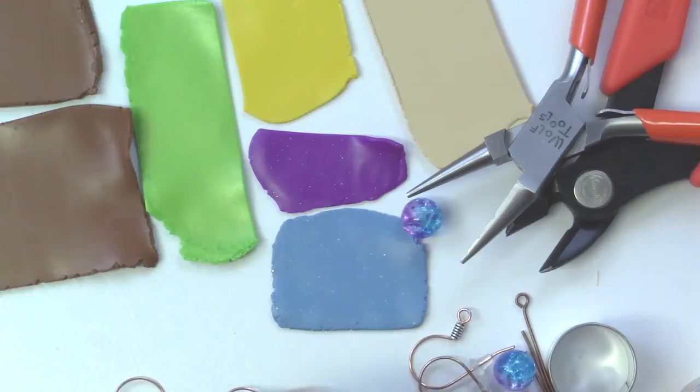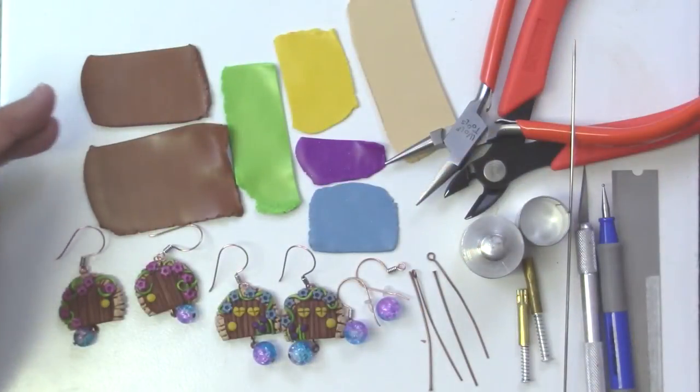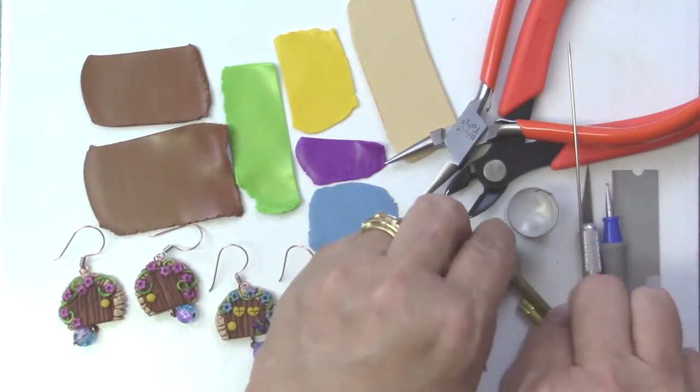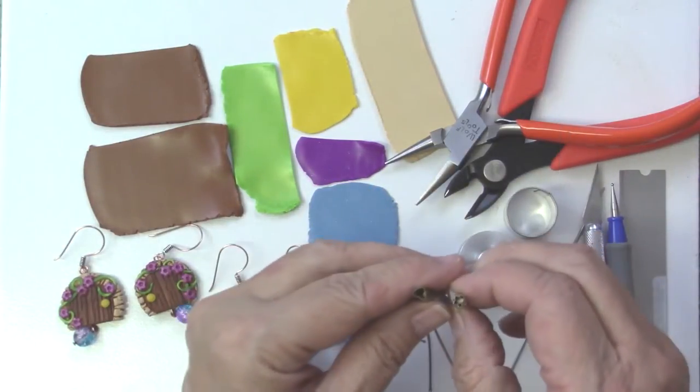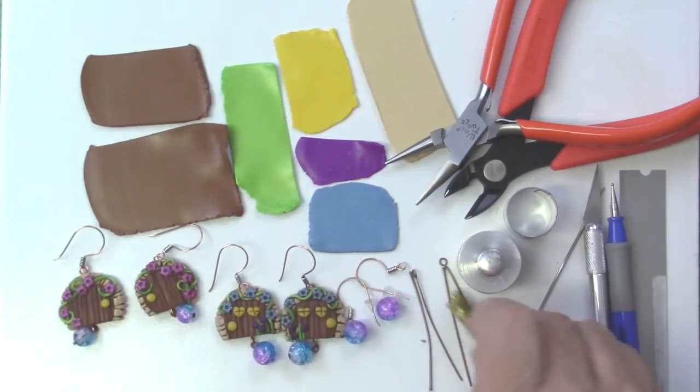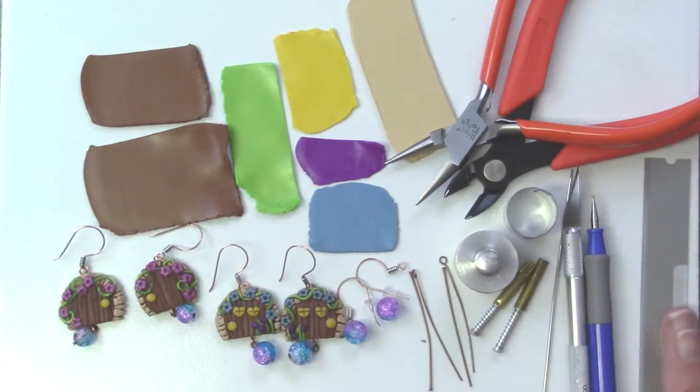The materials we'll use for this project is a variety of clay. We've got a base of brown clay and some cutters. I've got two sizes of round cutters and a little heart cutter and a little flower cutter. Those are five sixteenths.